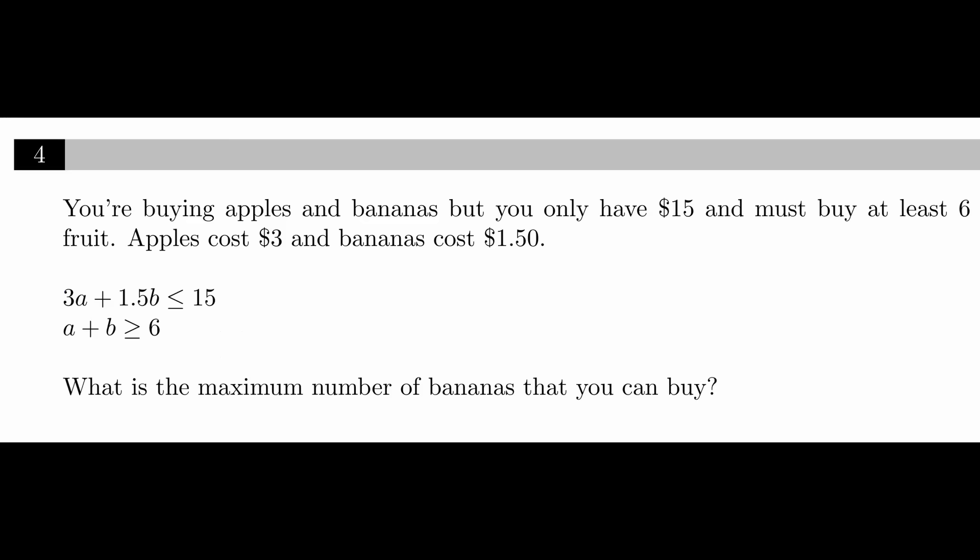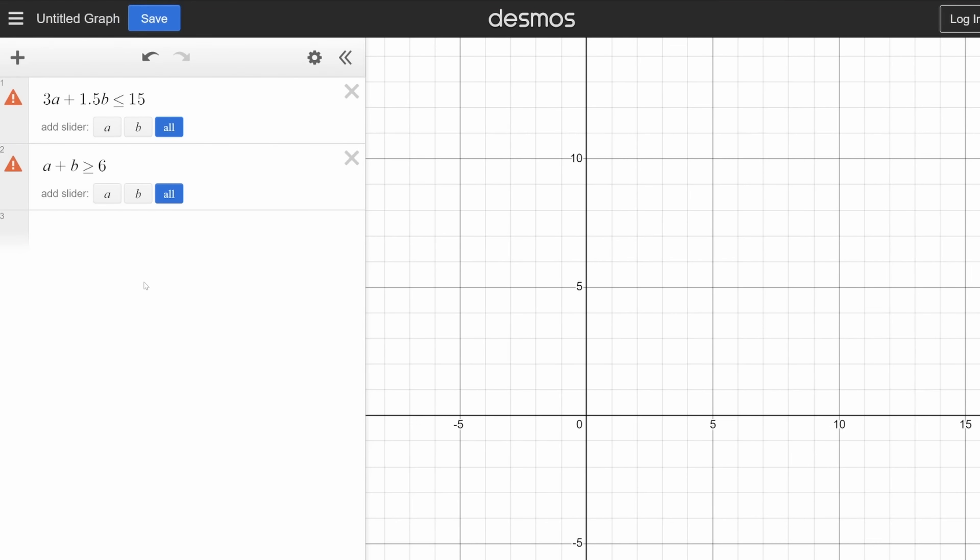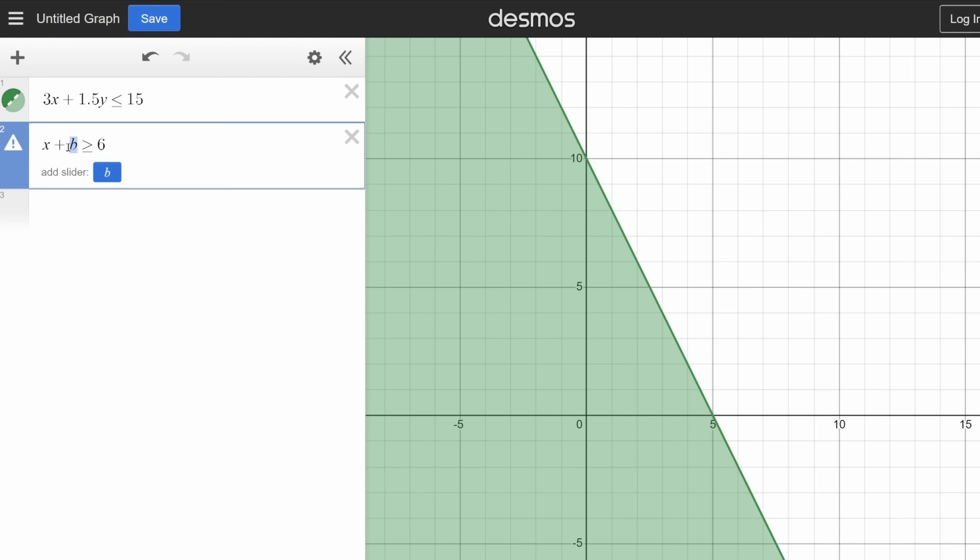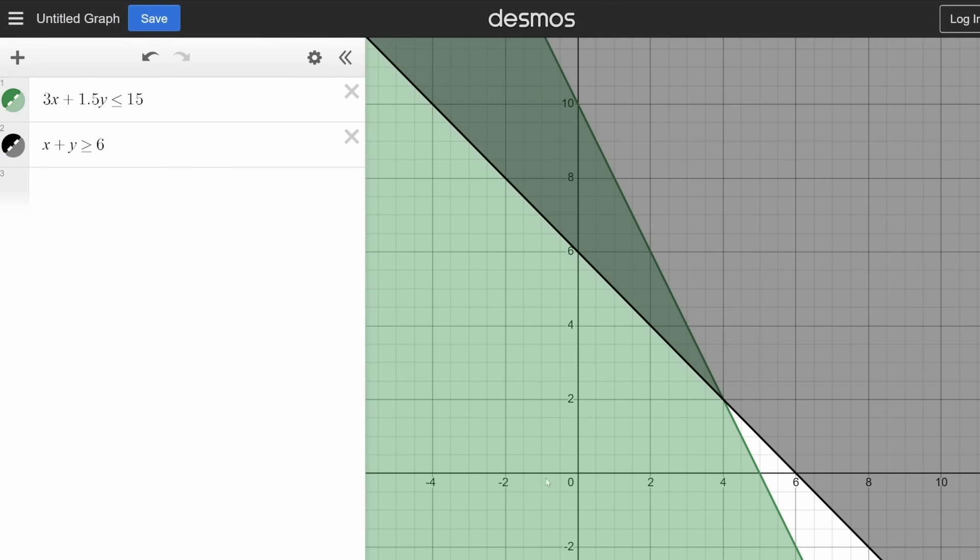Now the SAT might ask questions that give you an inequality in context. So in this scenario, we're buying apples and bananas, but we have a price constraint and a quantity constraint. And price and quantity constraints are a very common problem type you'll see on the SAT. And this question is not just asking what is a valid point for this inequality, it's specifically asking for the maximum number of bananas. So the way we would do this is first we'd want to graph our inequality. We can't use A's and B's because Desmos thinks those are constants, so we have to use X's and Y's.